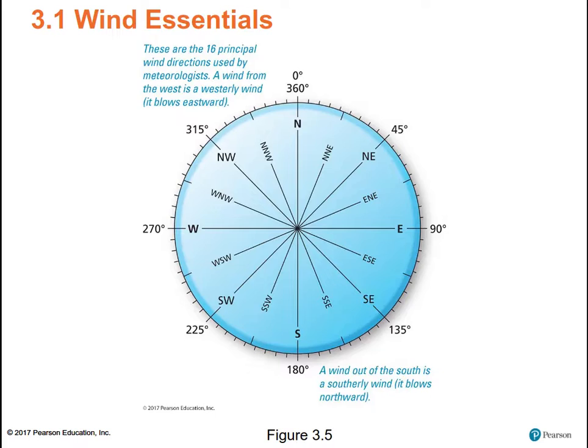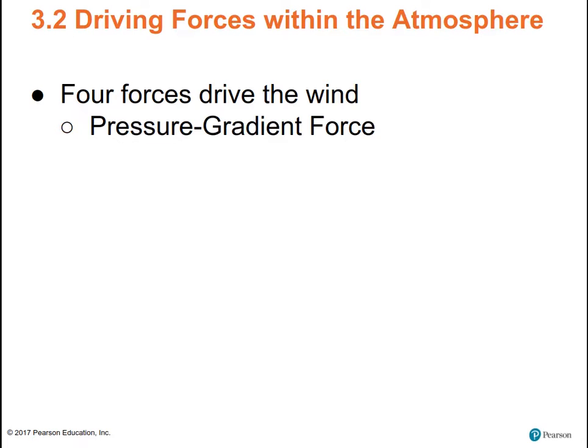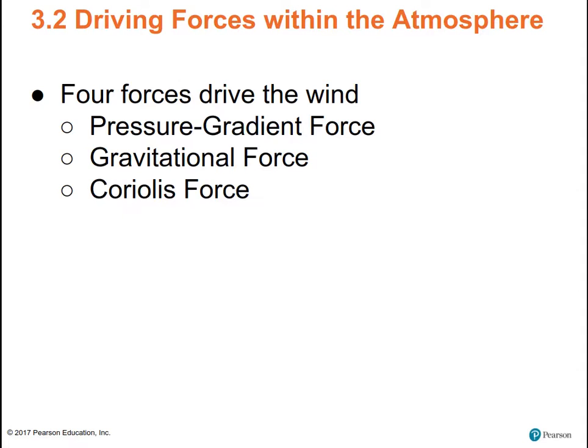There are four forces that drive wind. There's the pressure gradient force, which is the most important — air flows from high pressure to low pressure, just like water flowing downhill. There's the gravitational force, although that really just means we have an atmosphere; without gravity we wouldn't have one. Coriolis force is an apparent deflection caused by the rotation of Earth. The Earth rotates faster at the equator than at the poles.